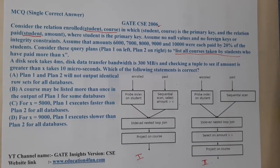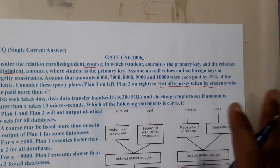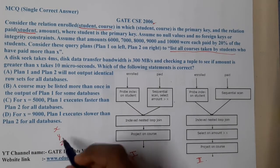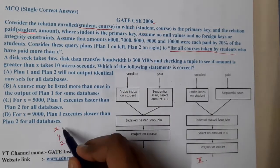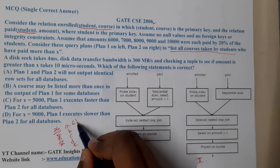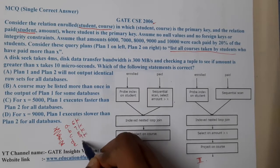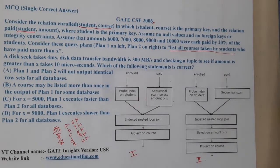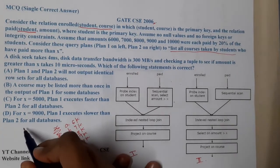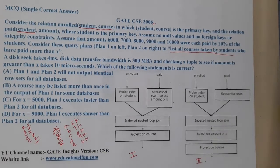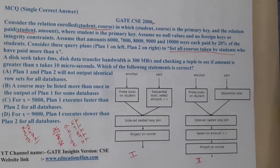Let us take a small example. Students A, B, C, D, E paid 6k, 7k, 8k, 9k, 10k respectively. There is another table with student name and course: A-X, B-X, C-X, D-Y, E-Z. A single course can be taken by multiple students — that is the main reason student and course are combined as the primary key.